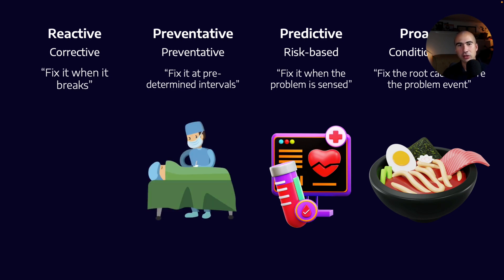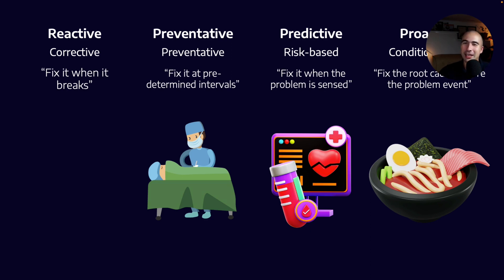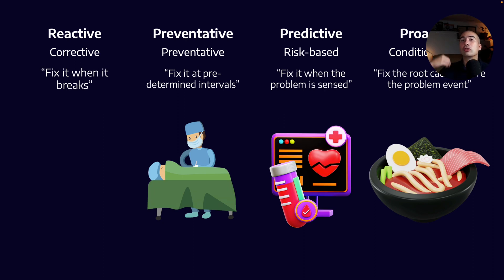Then we have preventative maintenance. Theoretically, if I wanted to ensure low cholesterol, I could go for open heart surgery on a predetermined interval — every year a doctor opens me up and cleans out my arteries. What's the risk of doing that? Maintenance-induced failures. Open heart surgery is dangerous and I could potentially die because I'm over-maintaining my heart, doing surgeries that aren't required. Exactly the same with oil: if we're changing oil on a routine interval without a condition-based approach, opening up the reservoir or sump may introduce contaminants that otherwise wouldn't have been introduced.